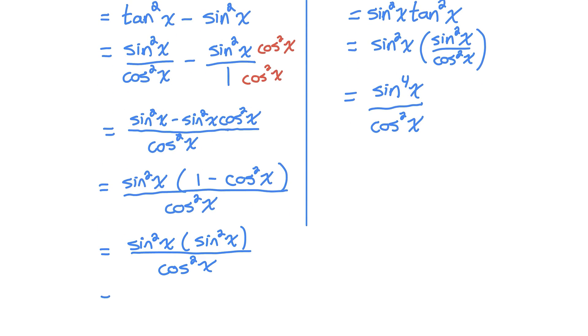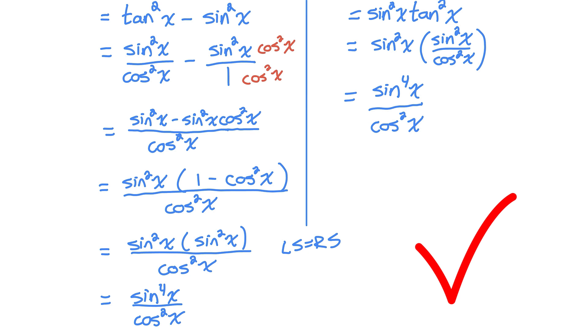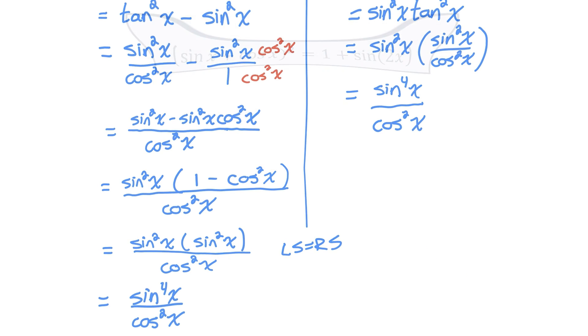Last step: sine squared times sine squared is sine to the power of 4x. I've shown the left and right sides are equal — left side equals right side, that identity is proven.